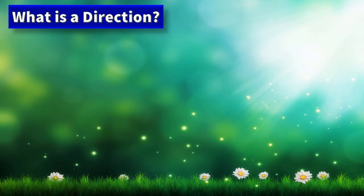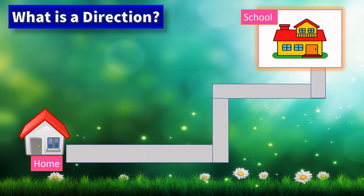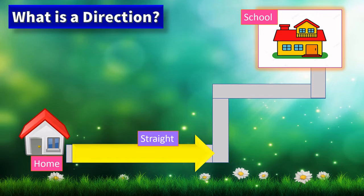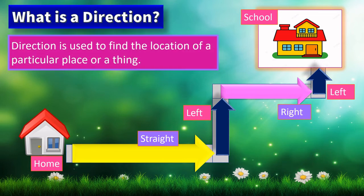Now let us see what is a direction. Suppose we want to guide someone how to reach school from our home. He has to travel a certain path, so we will guide him: go straight, then turn left, then turn right, and then turn left to reach school. Basically, direction is used to find the location of a particular place or a thing.